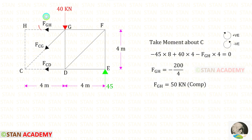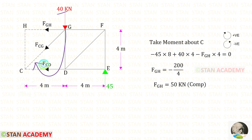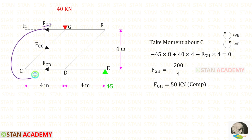First, I am going to find FGH. To find FGH, we can take moment about C. When we take moment about C, we do not need to consider FCG and FCD, which makes it very easy. Keeping clockwise as positive and anticlockwise as negative: the reaction is acting anticlockwise so it is negative with distance 8; the load is acting clockwise so it is positive with distance 4; FGH is acting anticlockwise so it is negative with distance 4. For FGH, we get a negative value, meaning it is compressive.